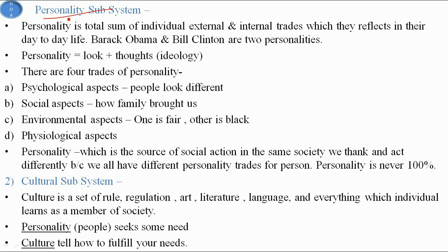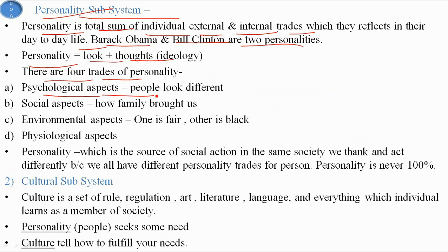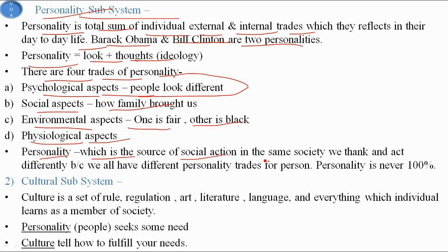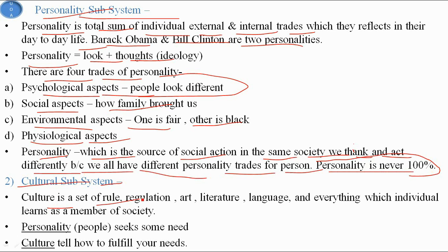The personality subsystem refers to the total sum of an individual's characteristics in day-to-day life. Personality consists of both look and thought — that is, ideology. There are four traits of personality: psychological aspect (how people look different), social aspect (how family brought us up), environmental aspect (how environment shapes us), and physiological aspect. Personality is the source of social action; in the same society we think and act differently because we all have different personality traits, and personality is never 100% the same.